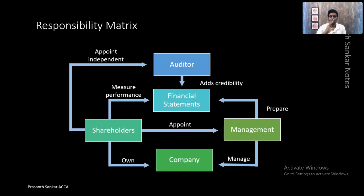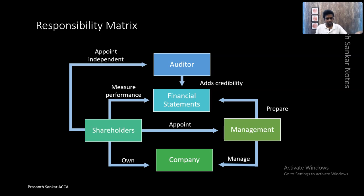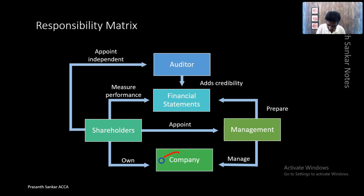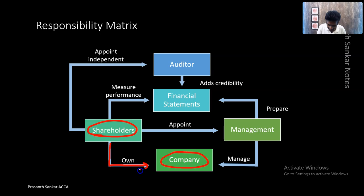Let's understand the responsibility metrics that revolves around audit — what all and who all consists of an audit. Like the mnemonic CREST we learned: criteria, report, evidence, subject matter, three-party relationship. Now, everything starts with the company. The company does not flourish on its own — there are shareholders who invest in the company, own the business, and make it a business model.